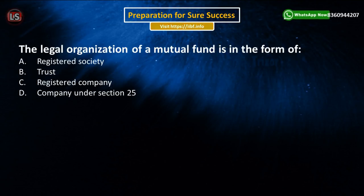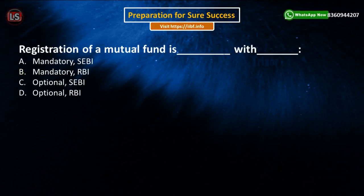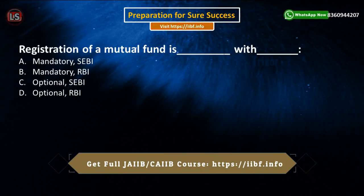The next question asks: What is the legal organization of a mutual fund — is it a registered society, trust, registered company, or a company under Section 25? The answer is Option B: the legal organization of a mutual fund is in the form of a trust.